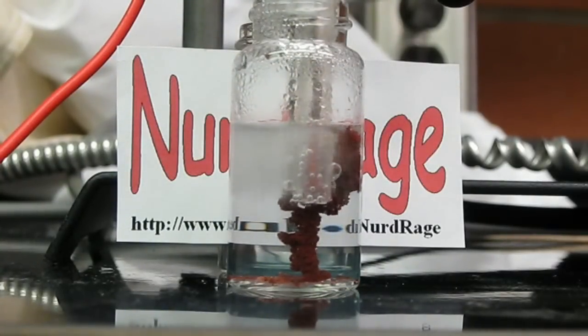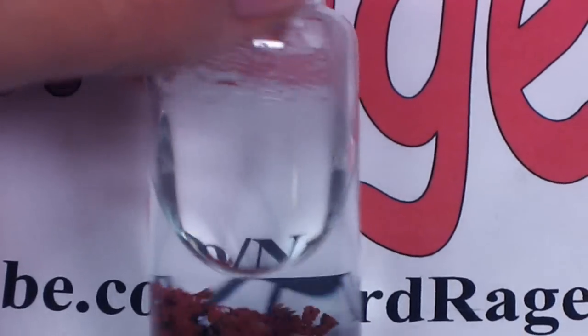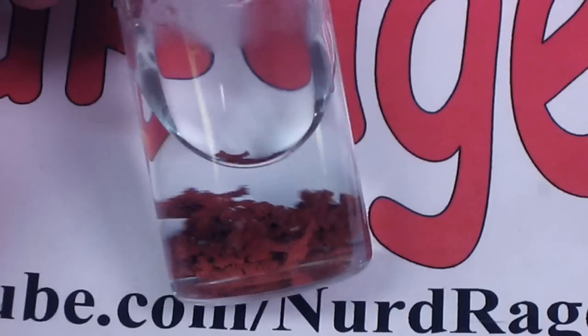Anyway, the conversion is now done. As you can see, we now have a solution of clear dilute sulfuric acid with bits of copper.